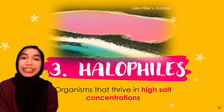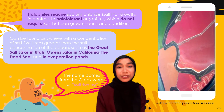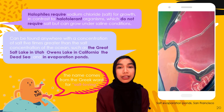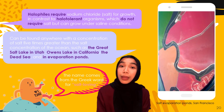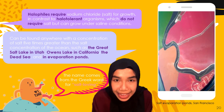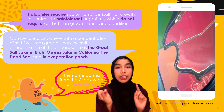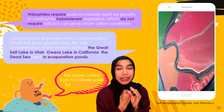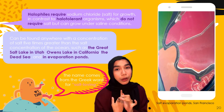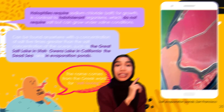The third and final extremophile is the halophile. Halophiles are organisms that thrive in high salt concentration, and the name comes from the Greek for 'salt loving.' Halophiles require sodium chloride for growth, while halo-tolerant organisms do not require salt but can grow under saline conditions. Halophiles can be found anywhere with salt concentration five times greater than the ocean — for example, the Great Salt Lake in Utah, Owens Lake in California, the Dead Sea, and even salt evaporation ponds like the pink and orange ones in San Francisco.